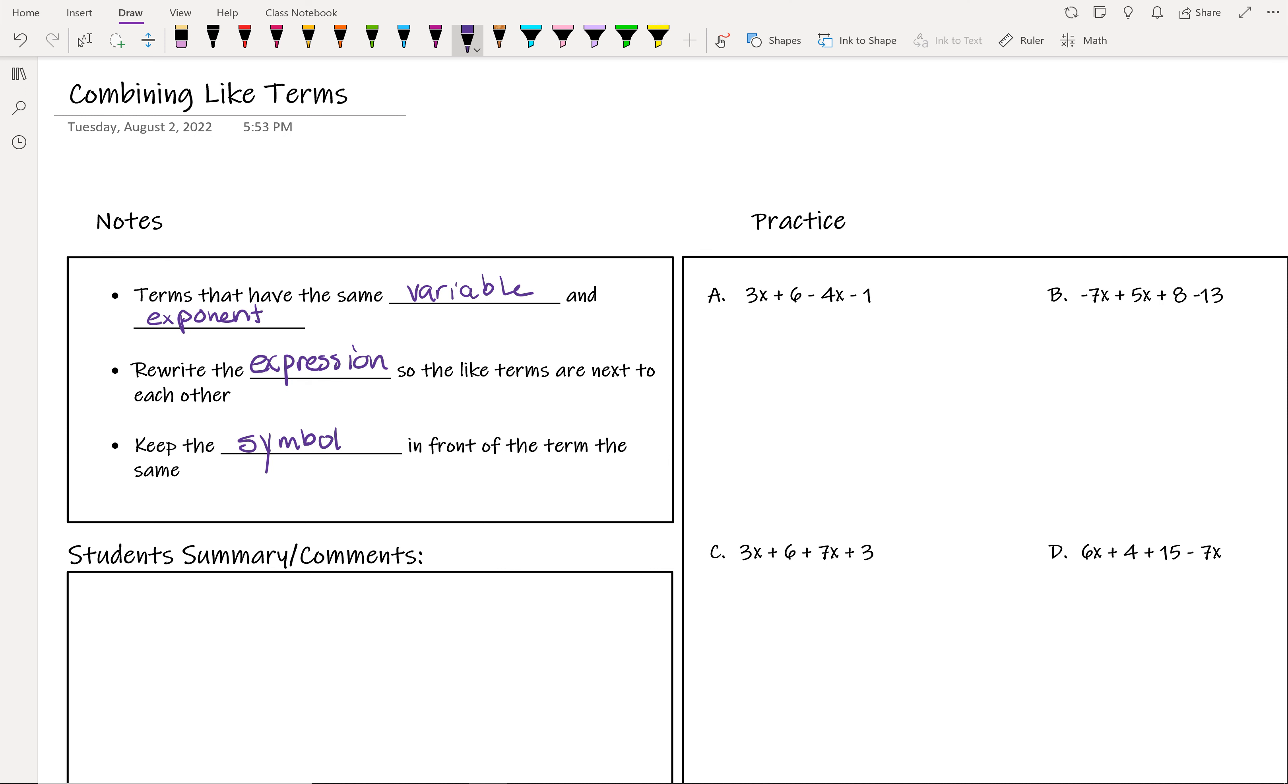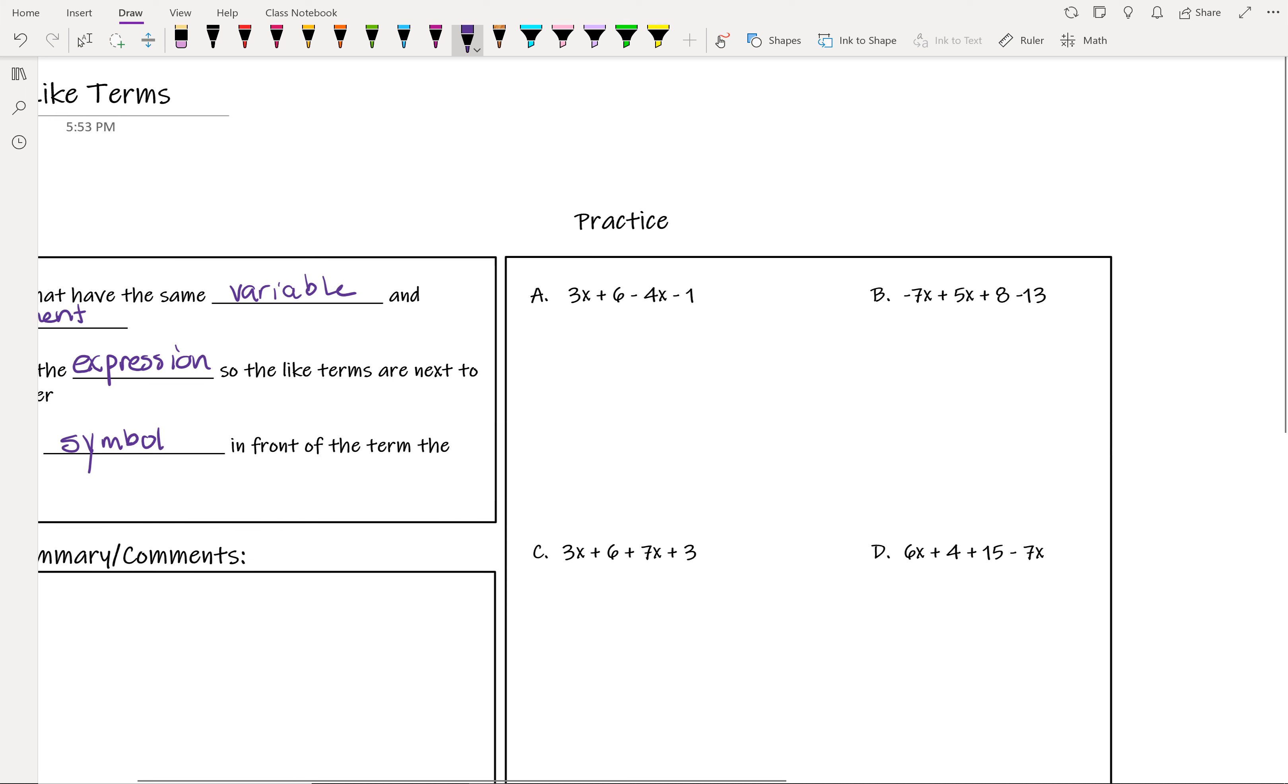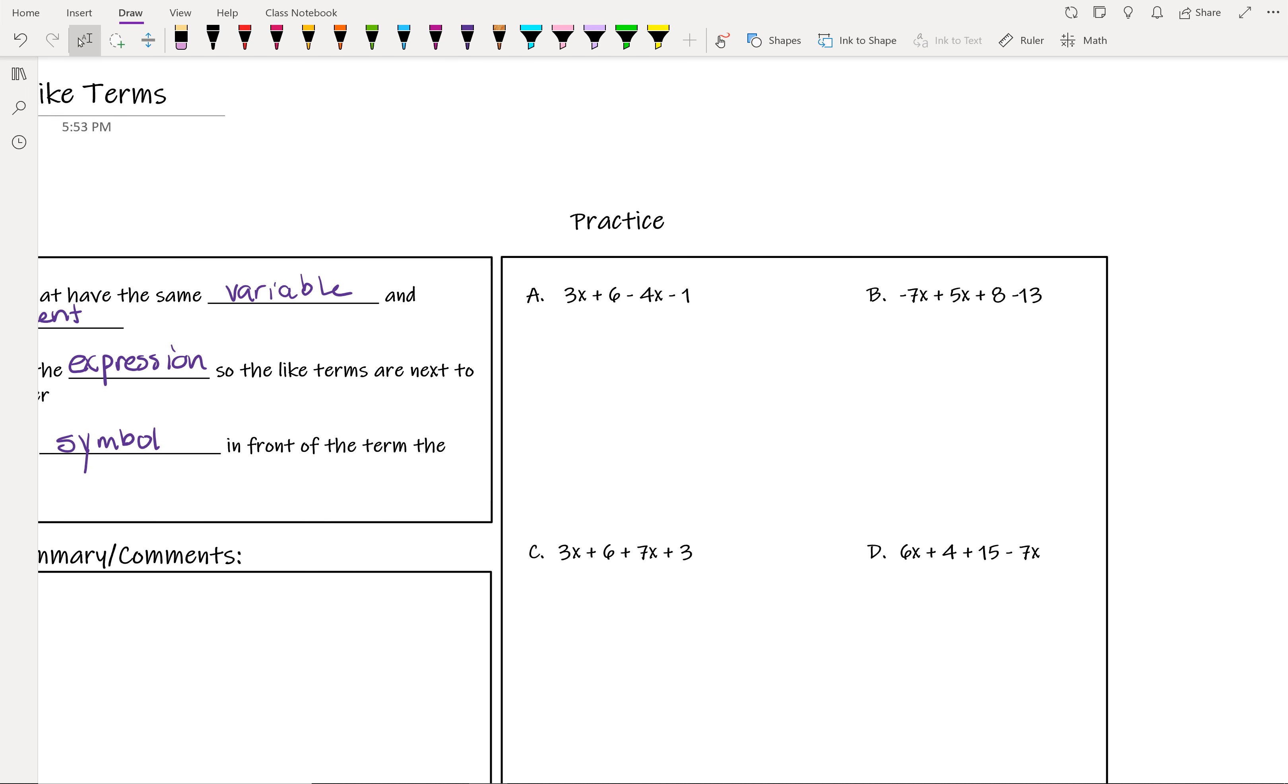Once you have your like terms set up, you get to add them normally using the coefficient, the number that's in front of your variable, or if it's a constant, a plain number, that one you have already been adding and subtracting regular numbers forever.